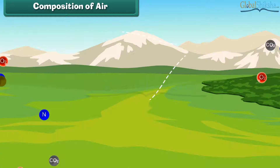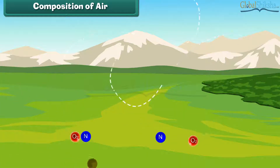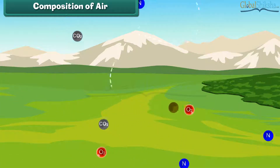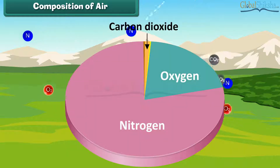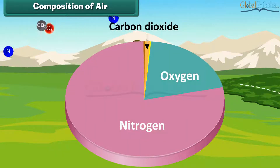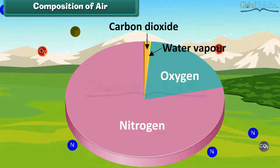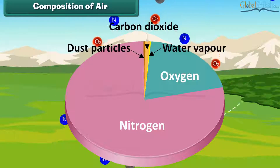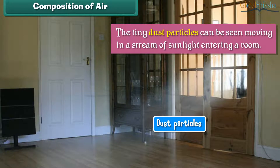Composition of air: Air is made up of several gases, the most important being nitrogen, oxygen, and carbon dioxide. Air also contains water vapor and dust particles. The tiny dust particles can be seen moving in a stream of sunlight entering a room.